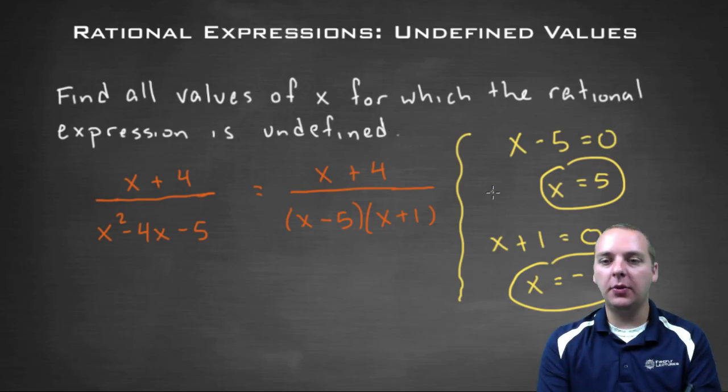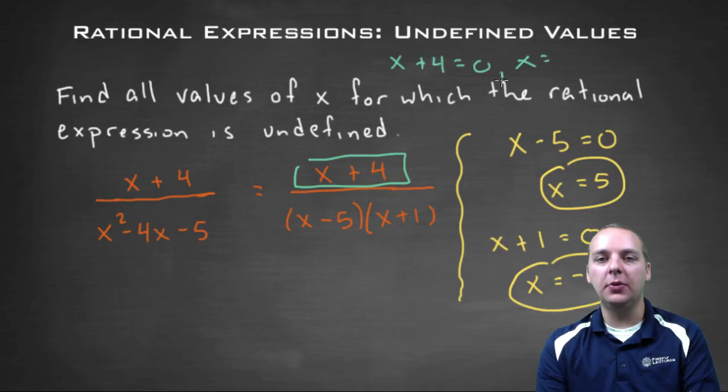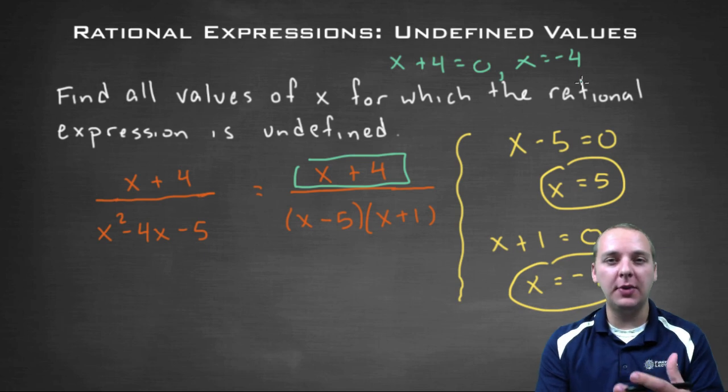Now last thing I wanted to talk about before we end this video is, what about the numerator? What about him? Should we set him equal to zero? What if you took x plus four, set that equal to zero and got x equals negative four. Is that something we should consider or throw in the mix or whatever?